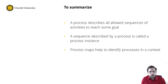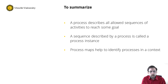To summarize, in this clip we discussed that processes describe all allowed sequences of activities to reach some goal. Such a sequence described by the process is called a process instance, and as a rule of thumb, this can often be seen as the direct object of the activities in the process. We have seen that process maps are a good aid to identify processes in a given context, by classifying processes as management, core, or support processes. And as process maps are models themselves, we can apply the reflective modeling cycle on them as well to create better models.